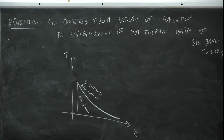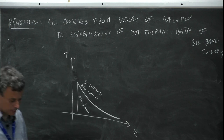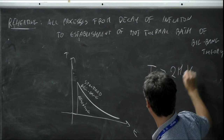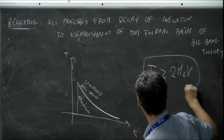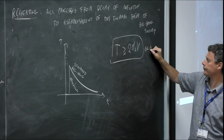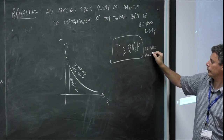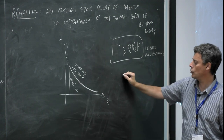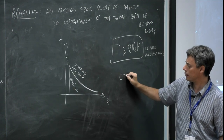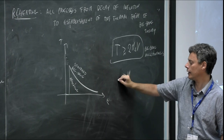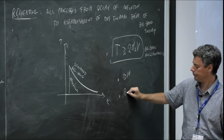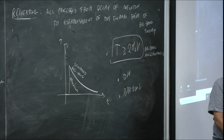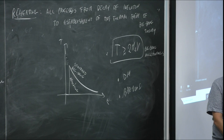There are some requirements for reheating — not very stringent but nonetheless important. One is that the reheating temperature should be greater than about 2 MeV, because you need big bang nucleosynthesis. You also need to produce cold dark matter, and you need the baryon asymmetry. These are three things that need to be taken into account during the reheating process.